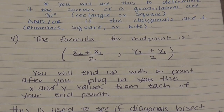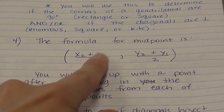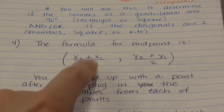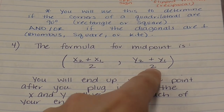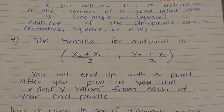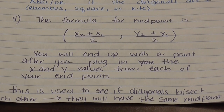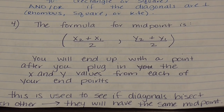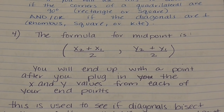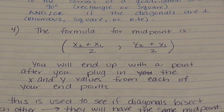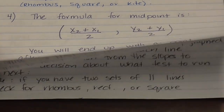The midpoint formula gives you the average of x values and the average of y values: x2 plus x1 over 2, and y2 plus y1 over 2. You end up with a point, not just one value. You can use the midpoint to figure out if the diagonals are bisecting each other — if two diagonals have the exact same midpoint, they bisect each other.